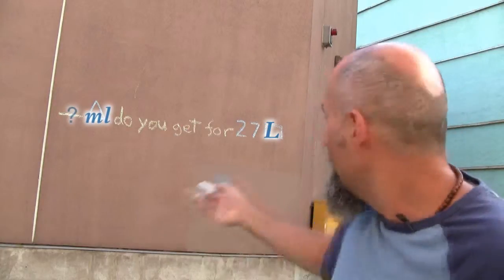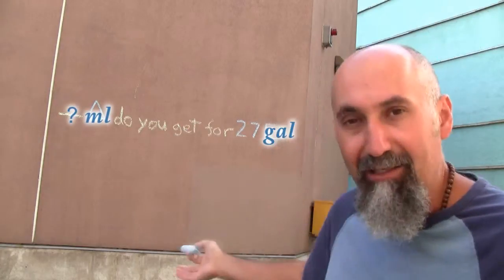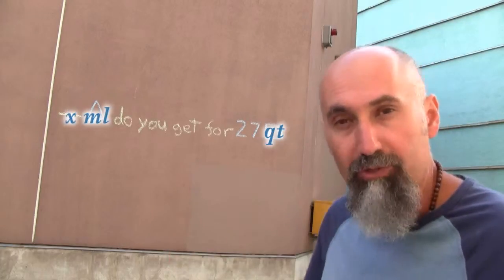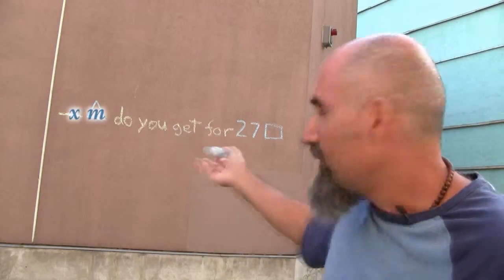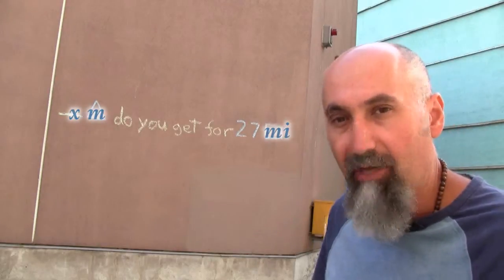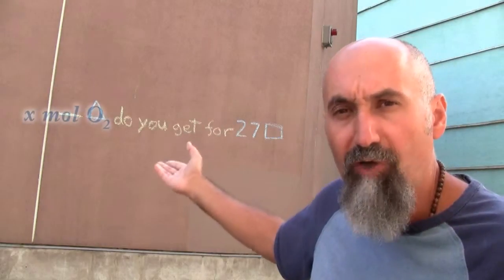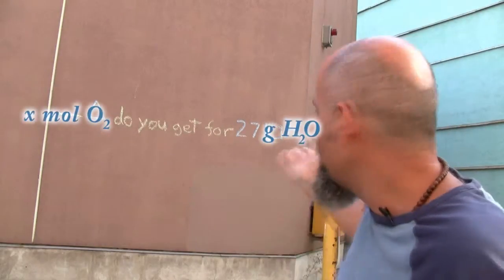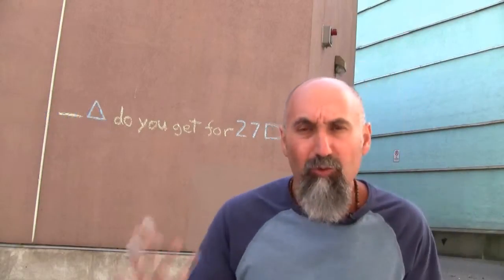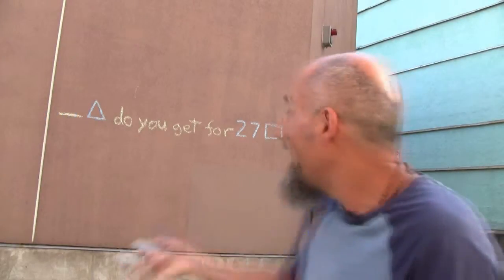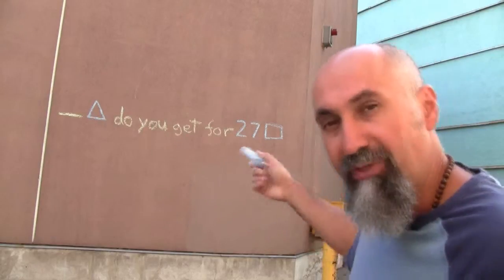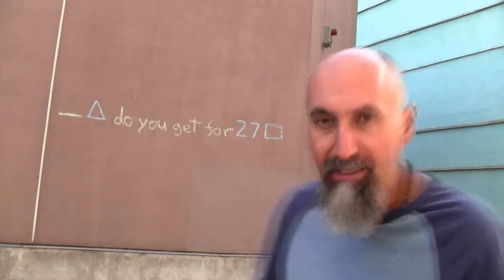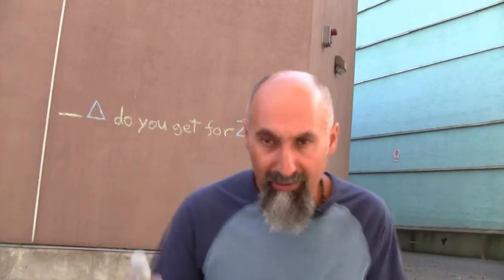This could be asking you how many milliliters are in 27 gallons of fluid, or how many meters are in 27 kilometers or miles, or how many moles of oxygen are in 27 grams of water, or how much you're going to get paid for 27 hours of work. That's what unit conversion is — going from one system to another.